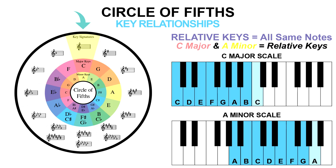For example, the C major scale is C, D, E, F, G, A, B, and C again. And the A minor scale is A, B, C, D, E, F, G, and A again. Notice that they're the same seven notes, just played in a different order. The C major scale starts at C and the A minor scale starts at A, but they're all the same notes. This means that C major is the relative major of A minor, and A minor is the relative minor of C major.